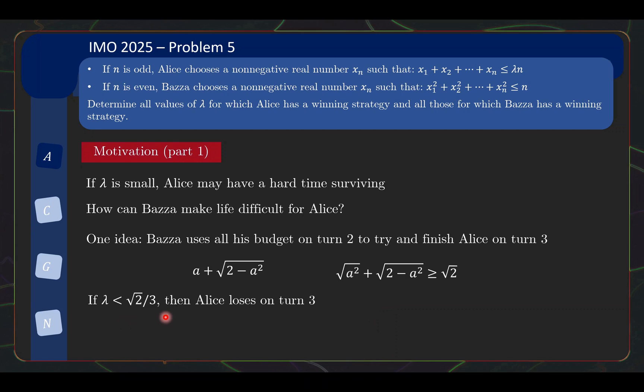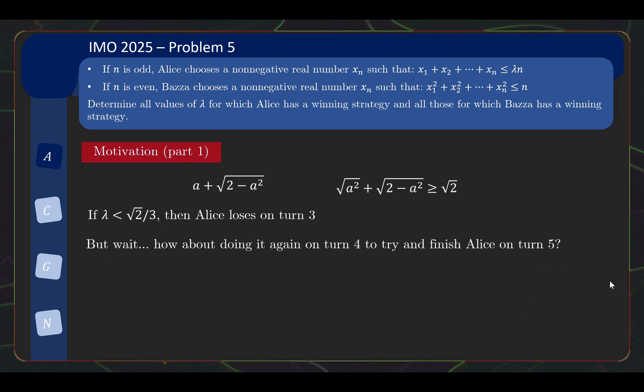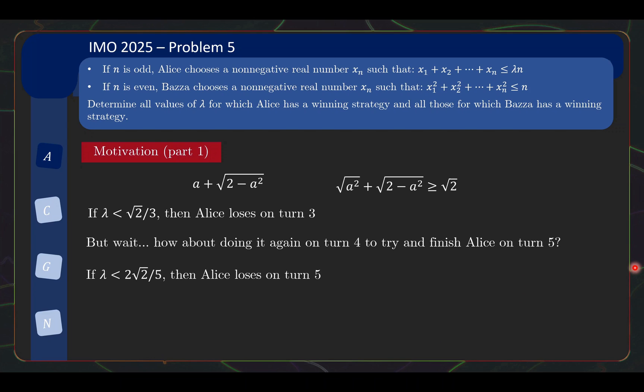Well, even if lambda is slightly bigger than this, and Alice survives on turn 3, Bazaar may say, hey, let's do this again on turn 4, and then try and finish Alice on turn 5. And indeed, we see that Bazaar can try and do that again. Basically, this time on turn 5, Alice would receive 2 times square root 2. The first square root 2 from the x1 plus x2, then another greater than or equal to square root 2 for x3 and x4, so you get 2 square root 2. And if lambda is less than this thing, then 2 square root 2 is already more than 5 lambda, so Alice can't do anything on turn 5, Alice loses. So it looks like Bazaar can keep doing this, continue to throw greater than or equal to square root 2 at at least every 2 turns. So it looks like if Alice's total budget increases at rate that is less than square root 2 over 2, eventually Alice will lose. This looks like a good starting point. So in fact, we pretty much sketched out the solution already for the first half.